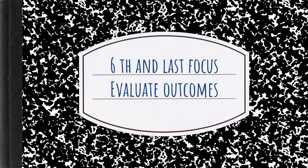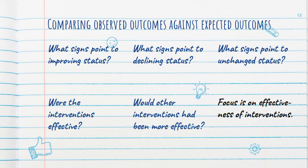Our sixth and last approach in the Clinical Judgment Model is to evaluate the outcomes. When we talk about evaluating outcomes, we mean comparing observed outcomes against expected outcomes. In this phase, you want to think: what signs point to improving status? What signs point to declining status? What signs point to unchanged status? Were the interventions effective? This is the time where you evaluate whether your thought process was correct, or whether you should have thought about something else. You want to focus on the effectiveness of the interventions.